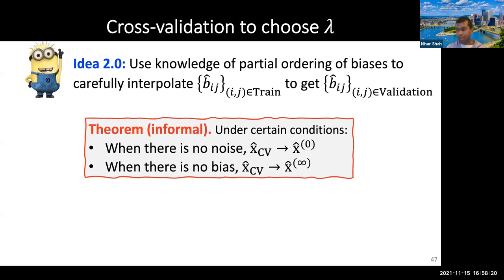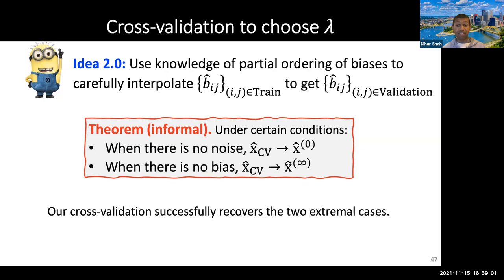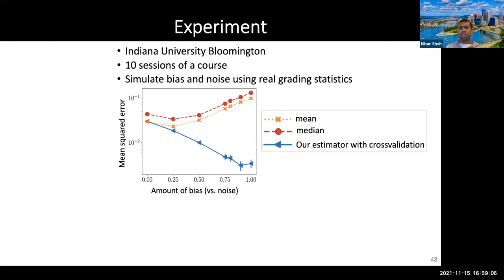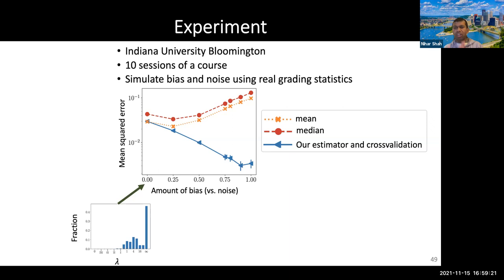We can show that under extremal conditions, the cross-validation estimator chooses λ = 0 when there is no noise, and λ = ∞ when there is no bias — recovering the right behavior in both cases. We have also done semi-synthetic experiments where our estimator does quite well in terms of mean squared error, and the choices of λ are surprisingly good.